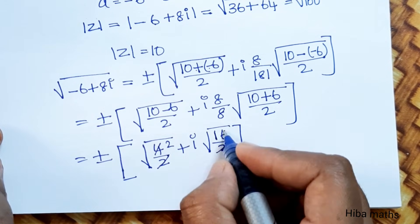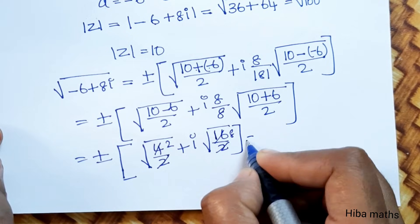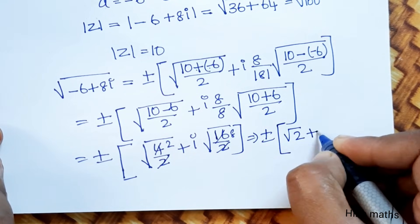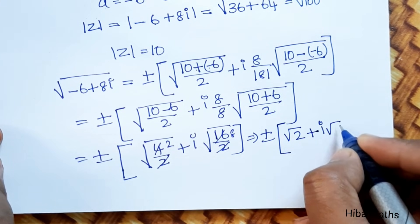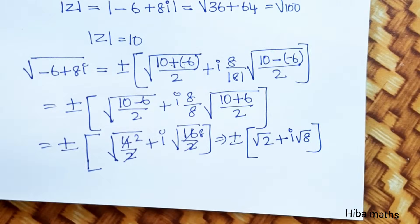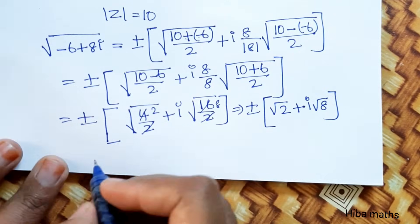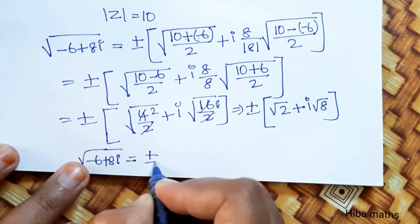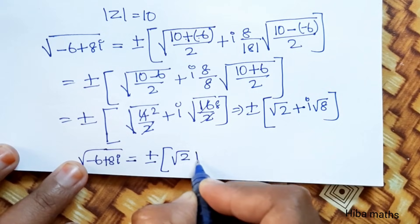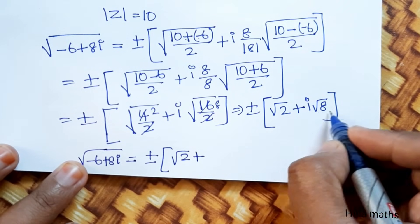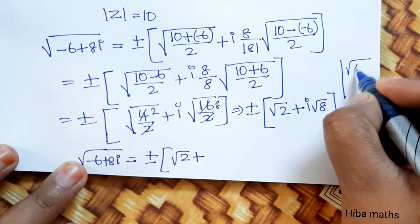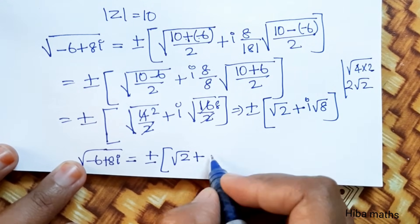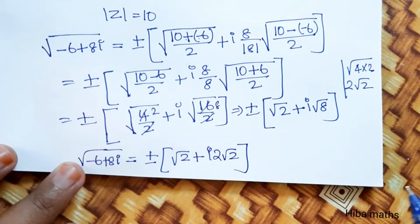Simplifying: root of 4/2 = root 2, and root of 16/2 = root 8. So root of (-6 + 8i) = plus or minus (root 2 + i times root 8). We can write root 8 as root of 4 times 2; root of 4 = 2, so root 8 = 2 root 2. Therefore the answer is plus or minus (root 2 + i times 2 root 2).